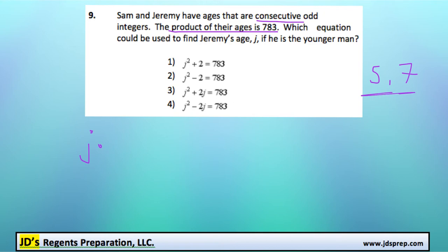Since Sam is going to be 2 years older, we could represent Sam's age as j plus 2. Let me just erase that there. Okay.